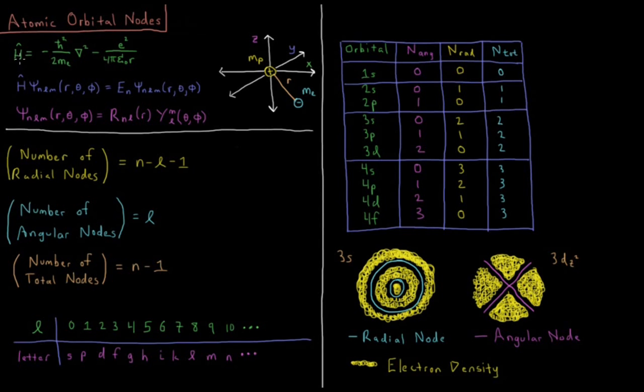Our Hamiltonian that we derived was equal to the kinetic energy operator negative h-bar squared over 2 times mass of the electron times Laplacian squared in spherical polar coordinates minus the potential energy E squared over 4 pi epsilon-naught R. Charge of the proton times charge of the electron is minus E squared over 4 pi epsilon-naught distance between them.